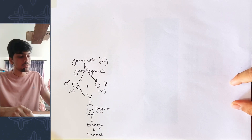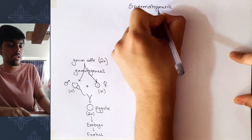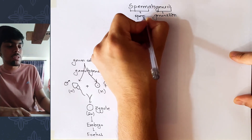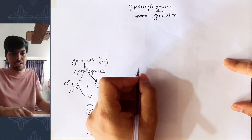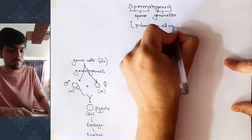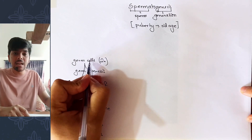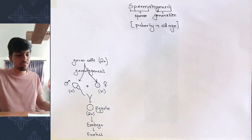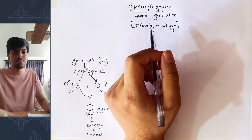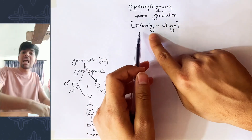The topic of today's lecture is spermatogenesis — the production of sperm in the male body. Genesis refers to generation and spermato refers to sperm. Spermatogenesis takes place from puberty till old age. Before puberty, the germ cells responsible for sperm formation are inactive. Once a boy hits puberty, the process of spermatogenesis begins and continues till old age.